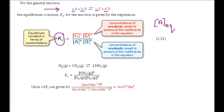In the reaction of nitrogen and hydrogen to form ammonia, for example, Kc is equal to the concentration of the product ammonia squared — because two moles of ammonia are formed in the reaction — divided by the concentration of nitrogen, since one mole of nitrogen reacts, multiplied by the concentration of hydrogen raised to the power three, because three moles of hydrogen react.